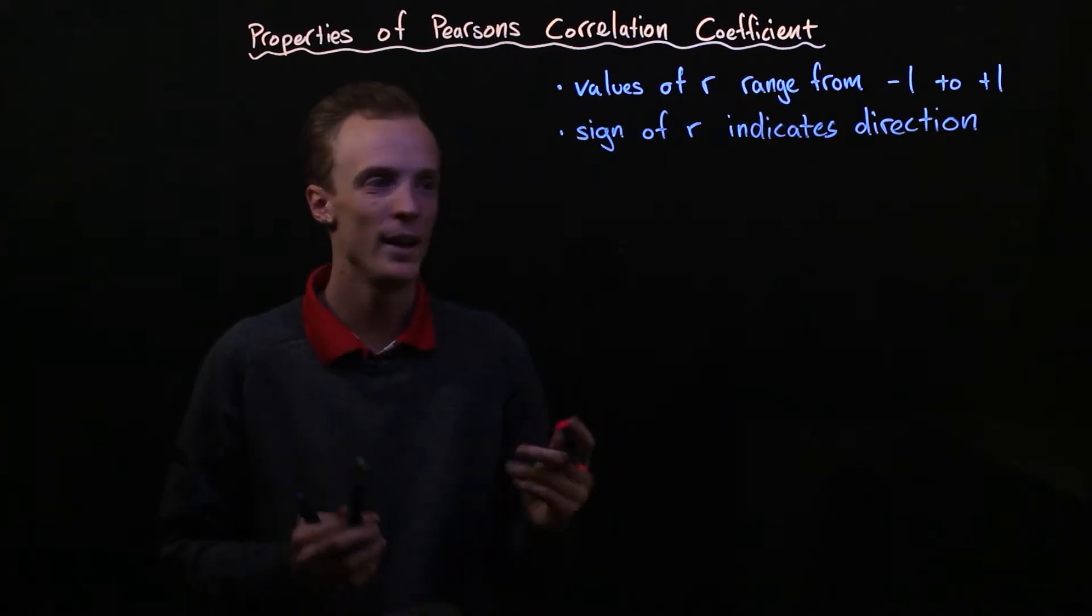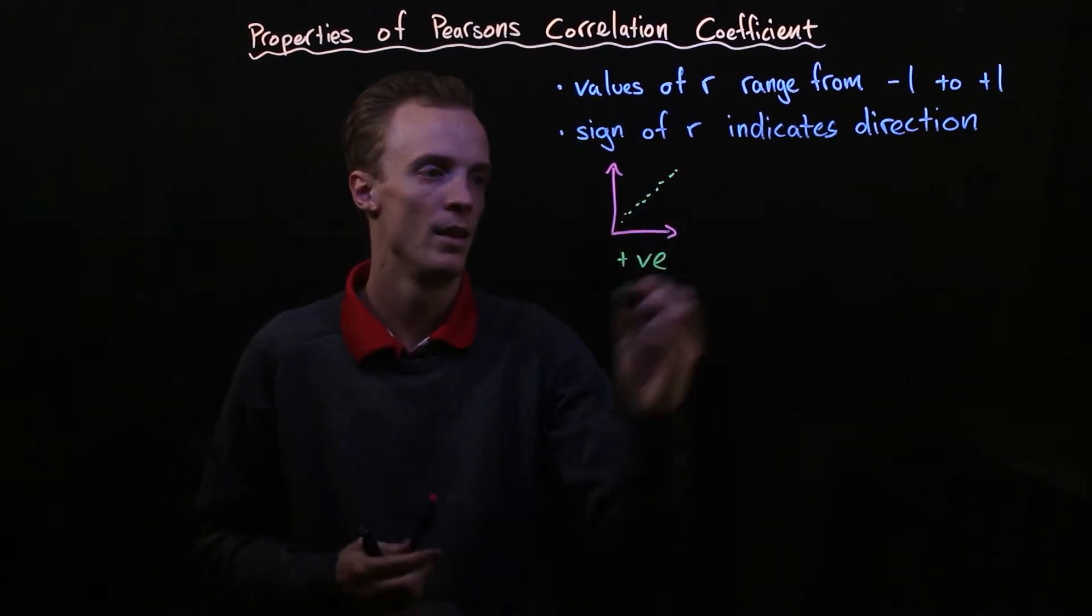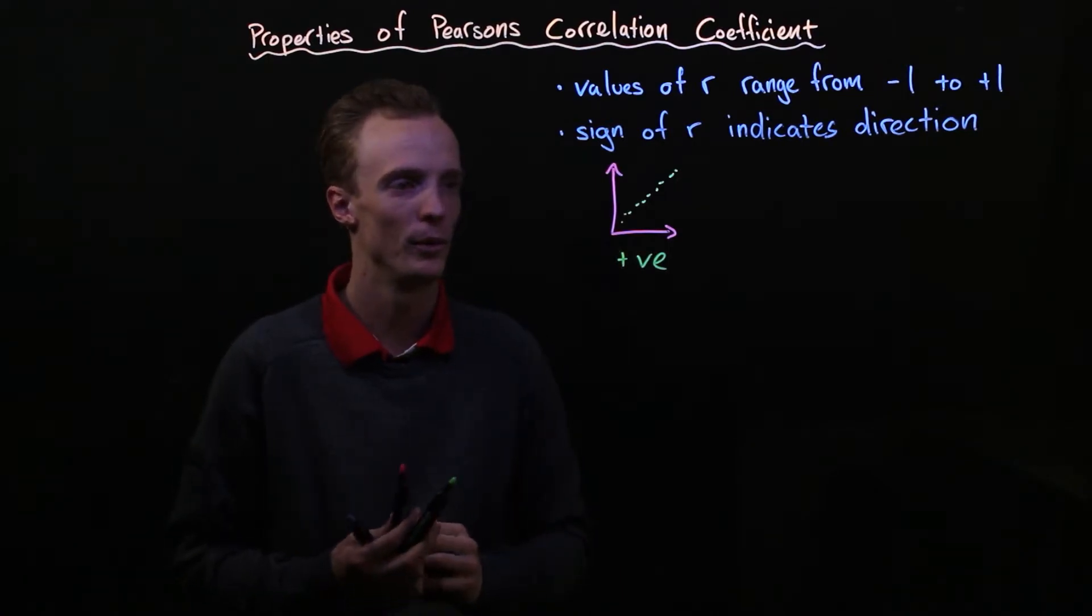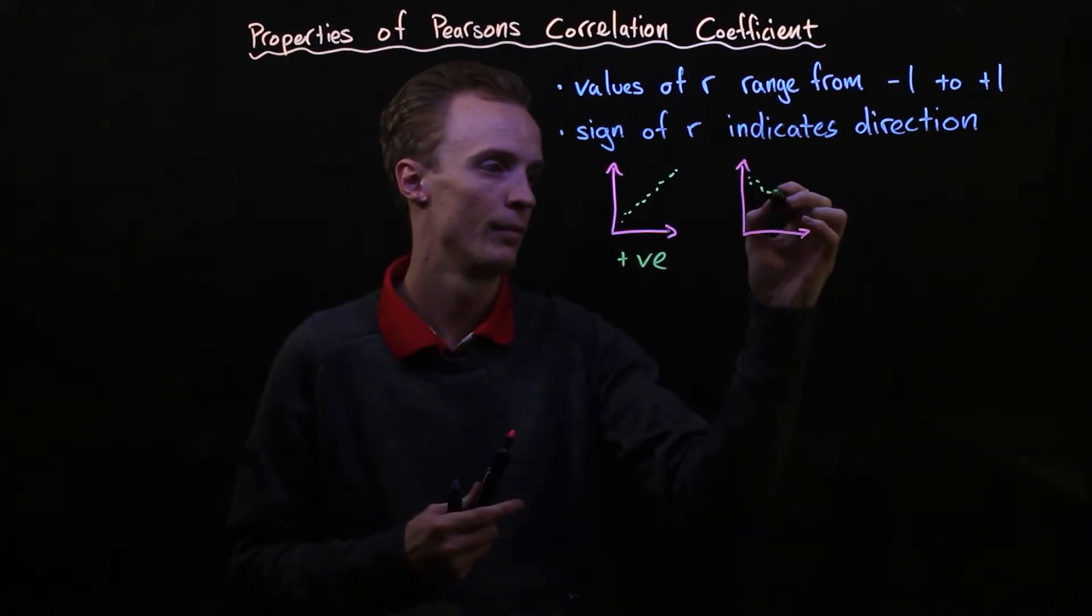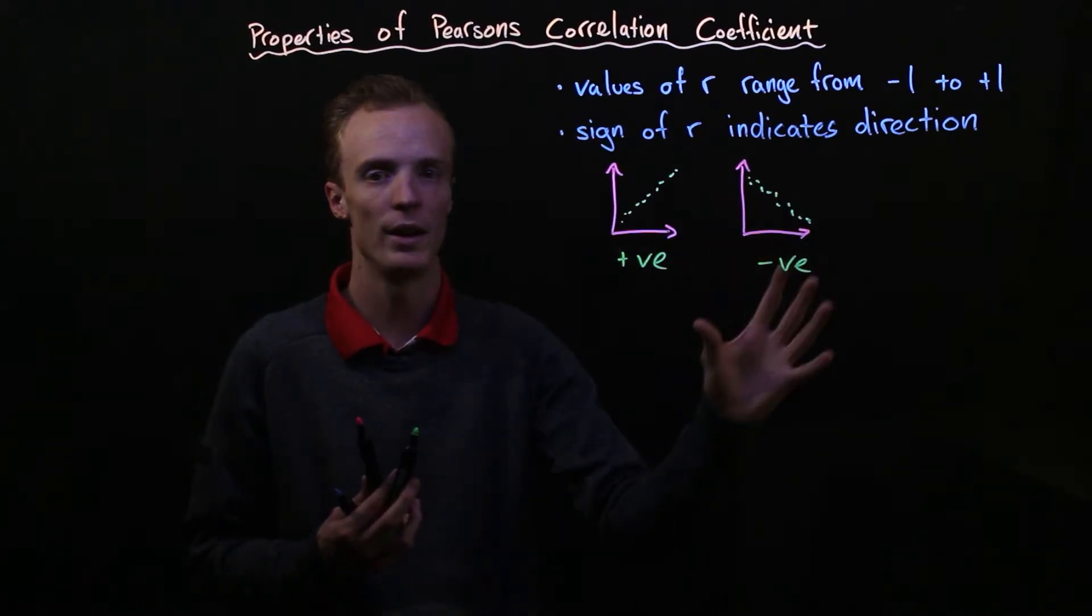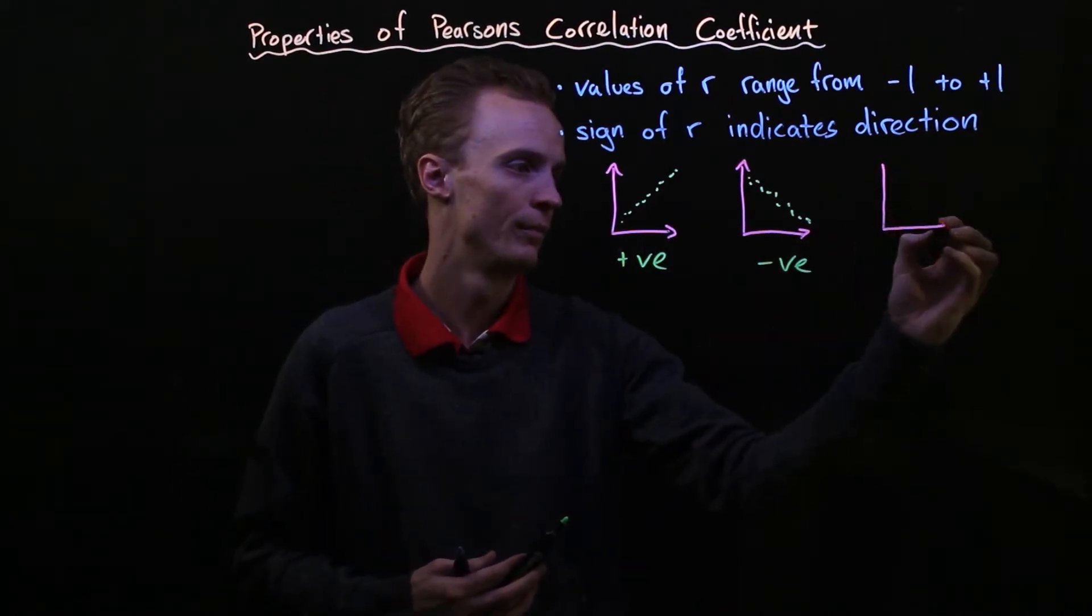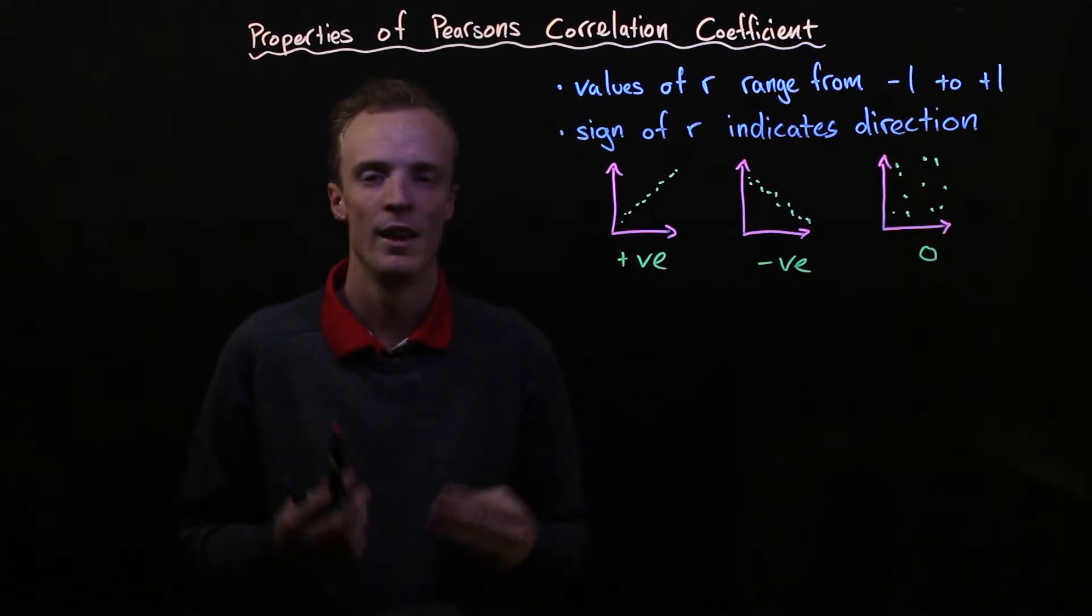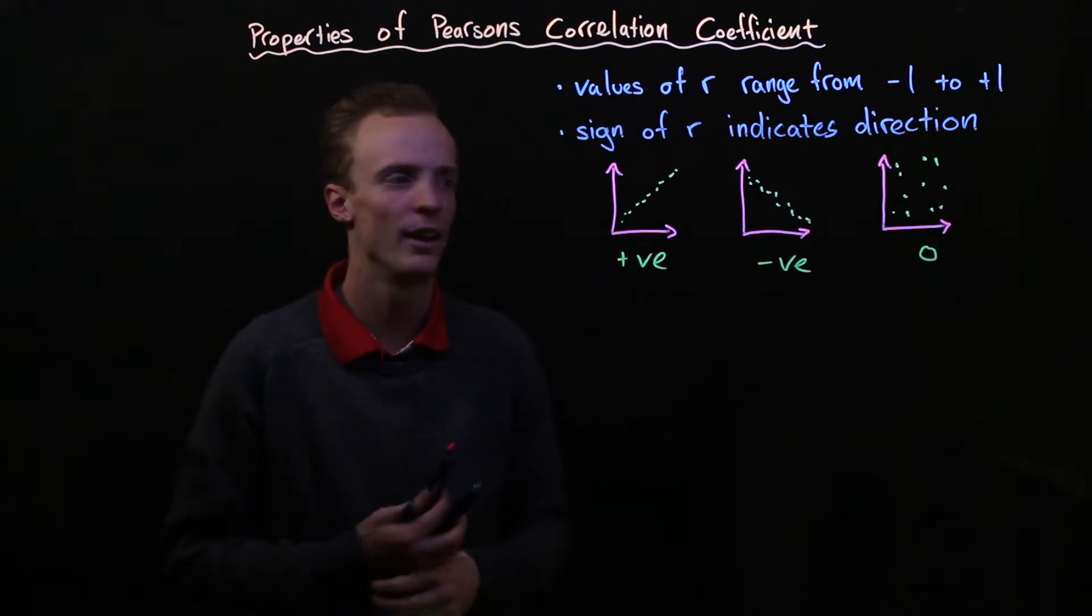For example, if we had a positive sign, it would indicate that we've got a positive relationship between our two variables. Whereas if we had a negative sign, it would indicate that we've got a negative correlation between our two variables. Where if it's got no sign, it would mean that it's got no correlation or our data points are just randomly scattered around the place.